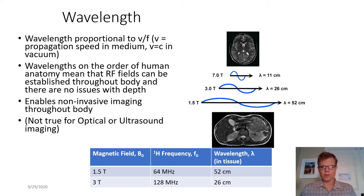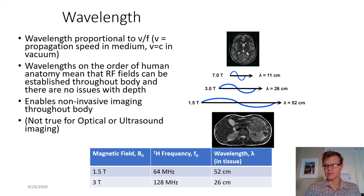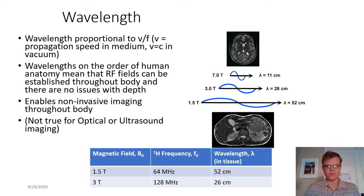Another consideration is that electromagnetic waves have a characteristic wavelength associated with them. It's proportional to the propagation speed — C, the speed of light in vacuum — divided by the frequency. The frequencies we're dealing with in MRI, a couple listed here for typical systems, are 64 and 128 megahertz. This drawing illustrates the wavelength of electromagnetic waves at this frequency. Compared to typical human body sizes, these wavelengths are about as big as the body, or a little less.